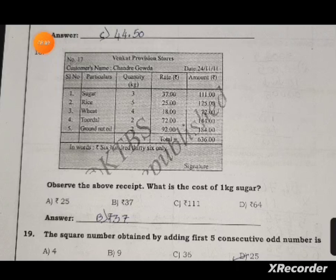Question eighteen: observe the provision store bill given. What is the cost of 1 kg of sugar? The rate is per kg. The amount equals the rate multiplied by the quantity purchased.